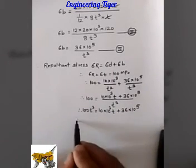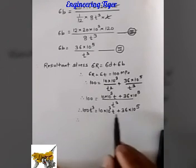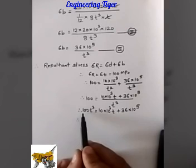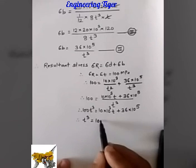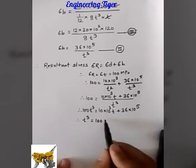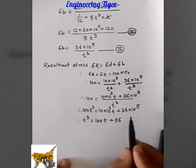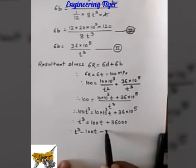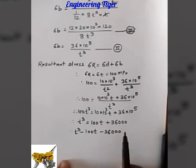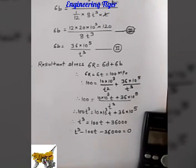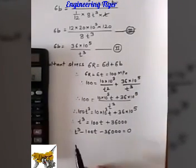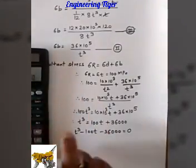Dividing both sides by 100, we get the polynomial equation: T³ minus 100T minus 36000 equals zero. This is a cubic polynomial equation of degree 3, which we can solve by trial and error or directly using a calculator.